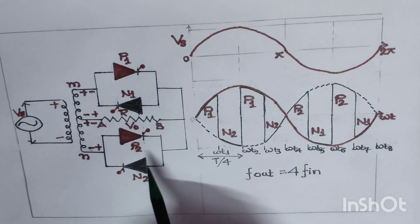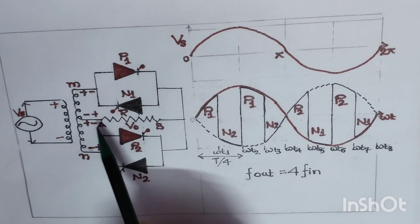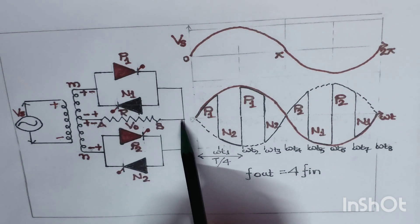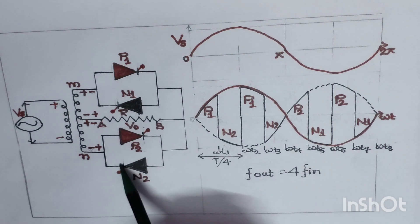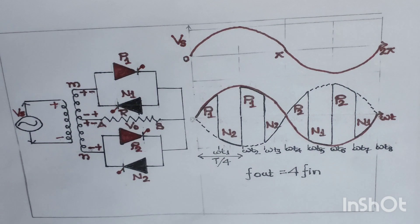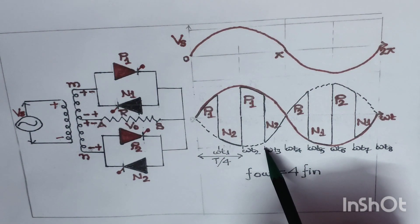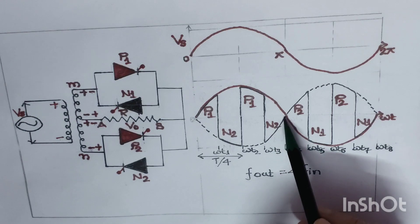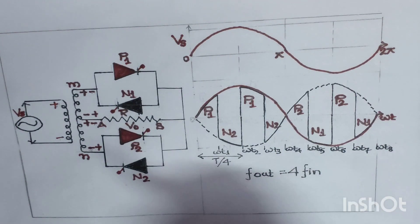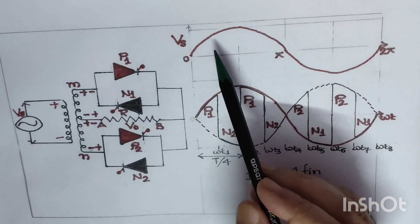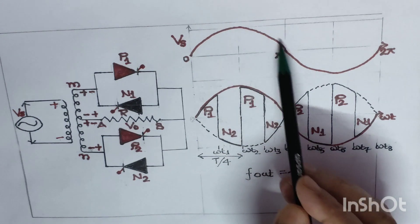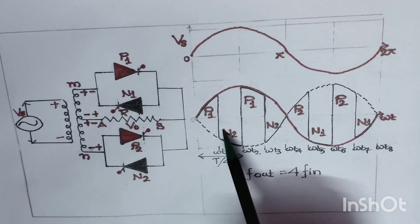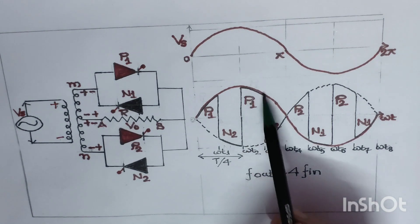At ωt3, we supply a trigger pulse to thyristor N2. Current flows from the positive terminal to point A, from A to B, through thyristor N2, and back towards the negative. This gives us a negative half cycle from ωt3 to ωt4. At ωt4, we have completed two full output cycles during the positive half of the input supply: one cycle from 0 to ωt2, and another from ωt2 to ωt4.